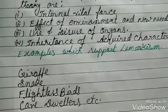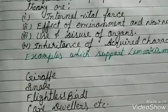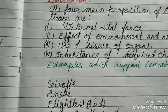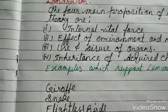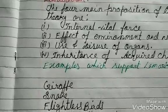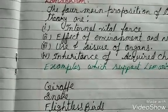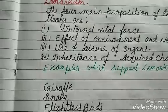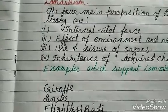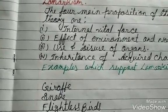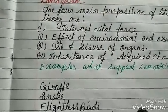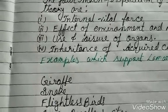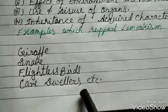Next is flightless birds. The ancestors of flightless birds were capable of flying, but due to some environmental factors they had plenty of food and were well protected. So they did not use their wings, and that is why their wings became vestigial.